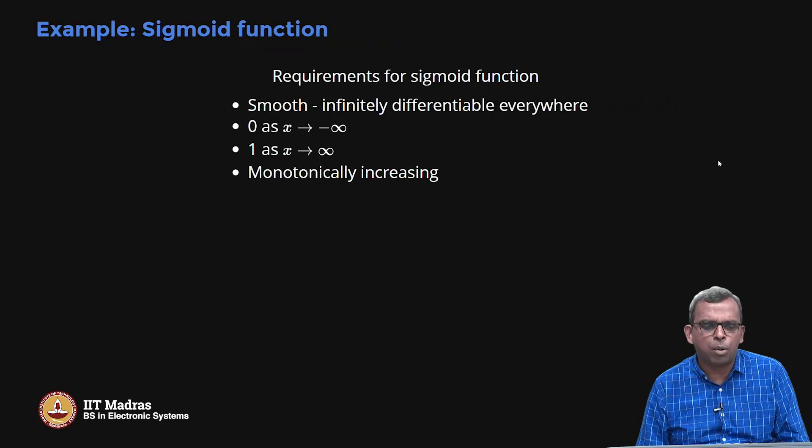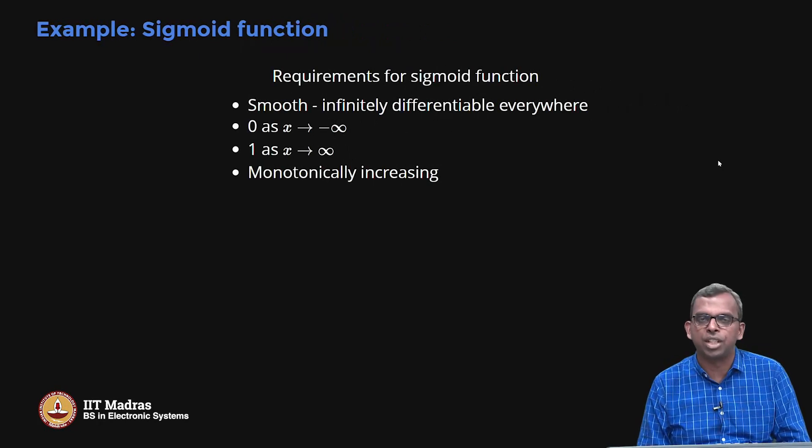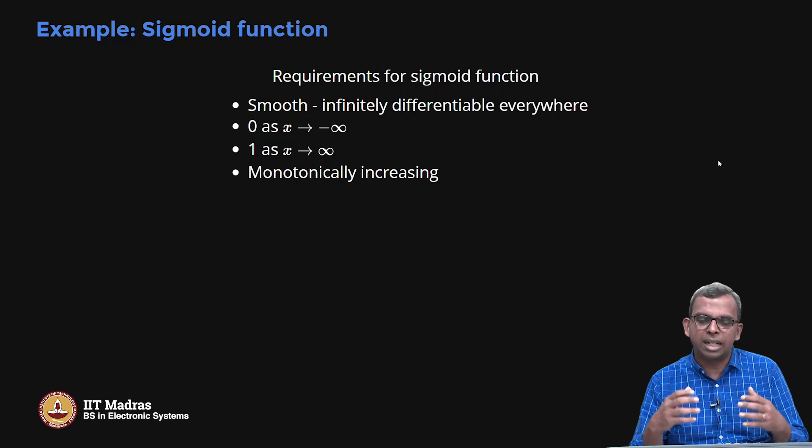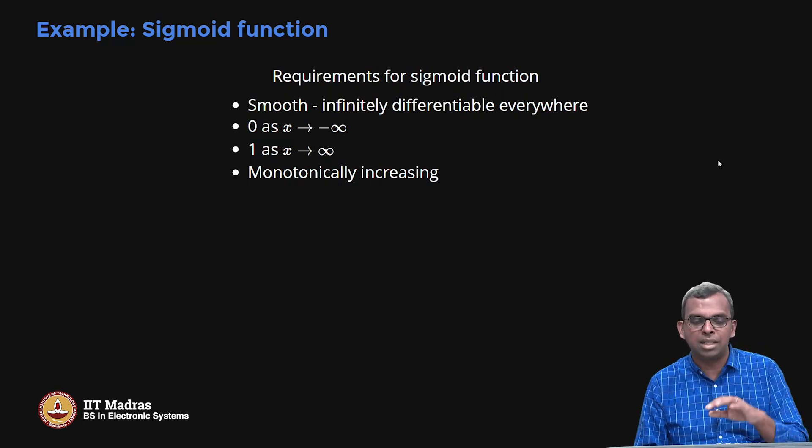Let me show you an example. A very popular function these days is called the sigmoid function. It is used in learning algorithms a lot and it has a lot of wonderful properties. So if you look at the requirements for the sigmoid function, these are the sort of requirements.